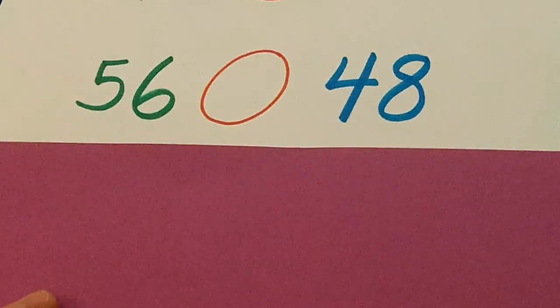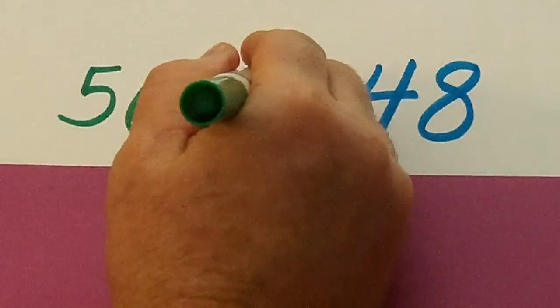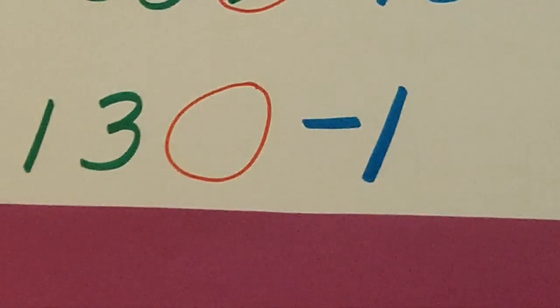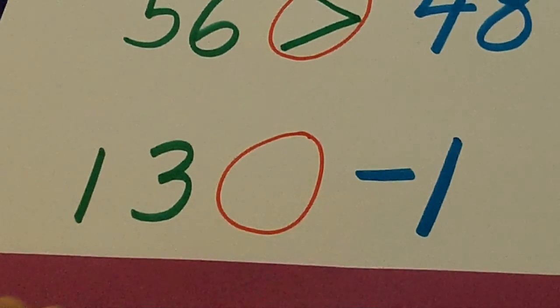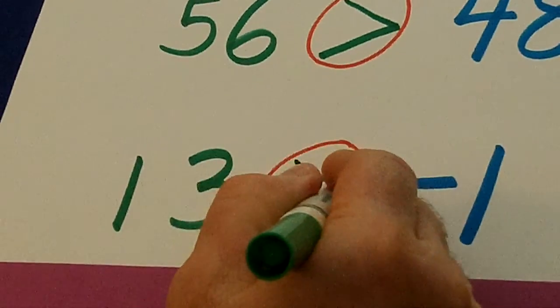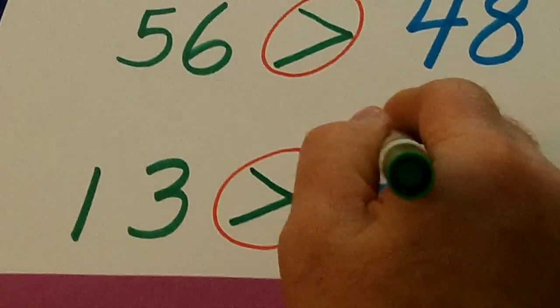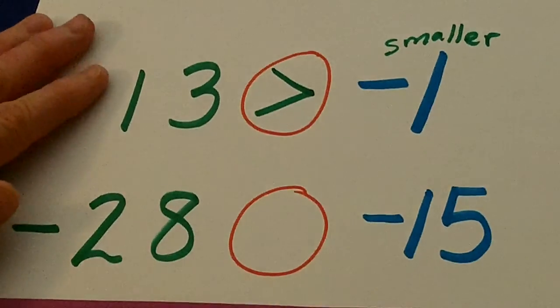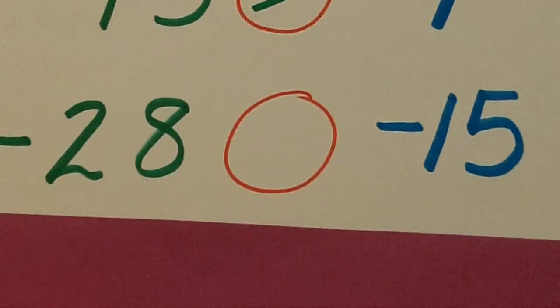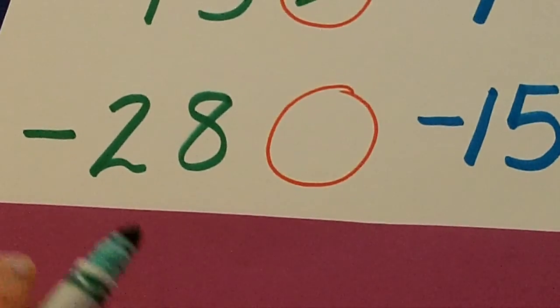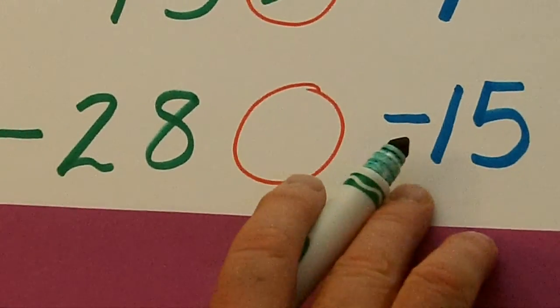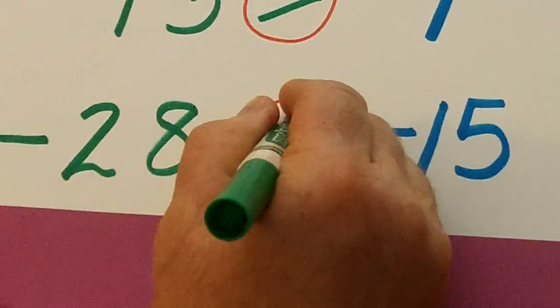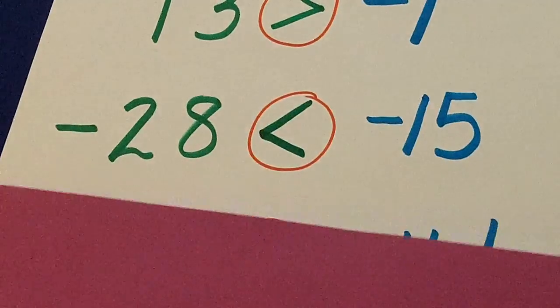We have two positive numbers, so 56 is bigger than 48. This is positive, so it has to be bigger than that negative. Arrow shoots the smaller number. Two negative numbers, which is colder. I'd rather be in a negative 15 degrees than I would here. This is real chilly. So this is smaller.